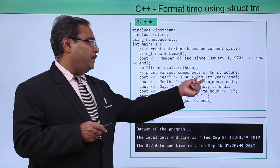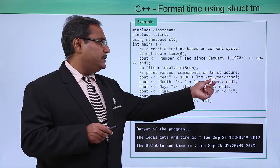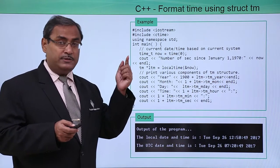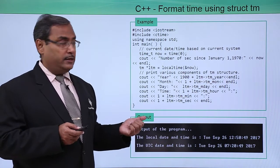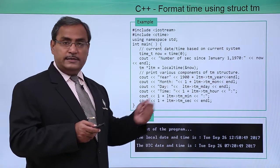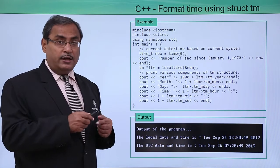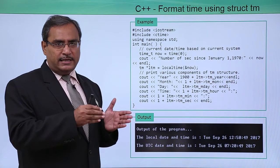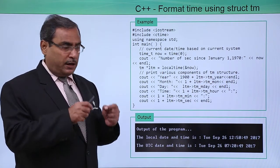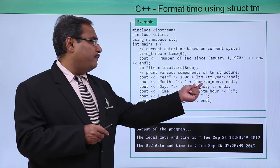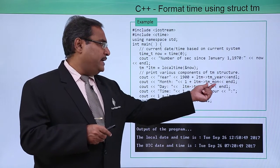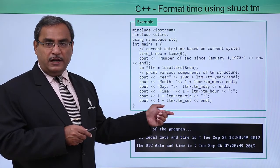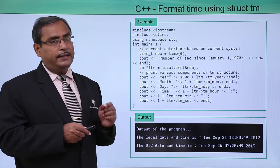Now we are printing 1900 plus ltm->tm_year. These are the fields in the TM structure which we discussed in the earlier video. 1900 is added because the year field ranges starting from 0, so adding the base year 1900 gives you the current year. In this way we access ltm->tm_month and print different fields from the TM structure.